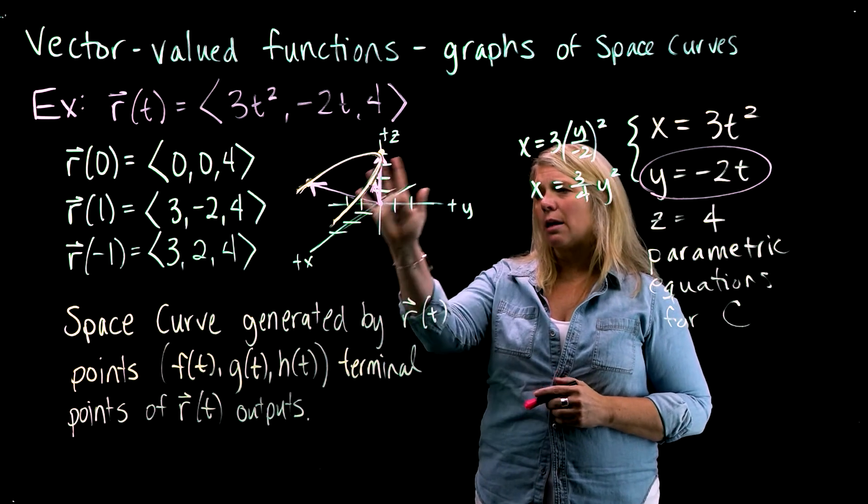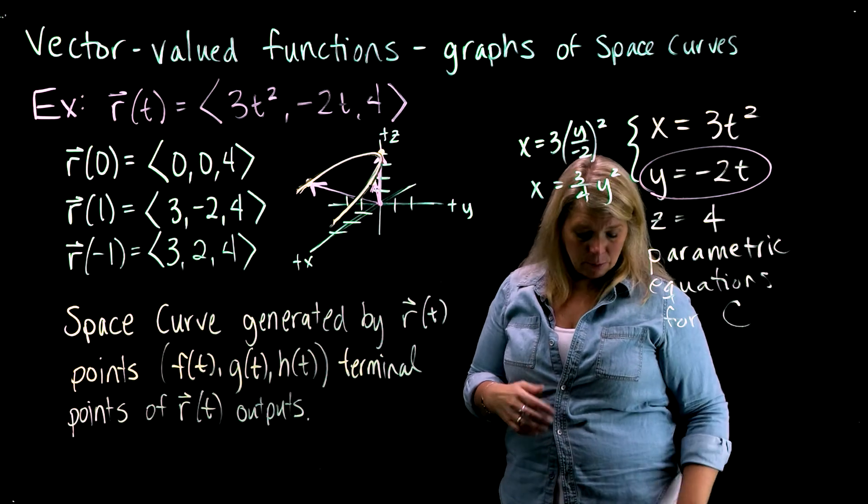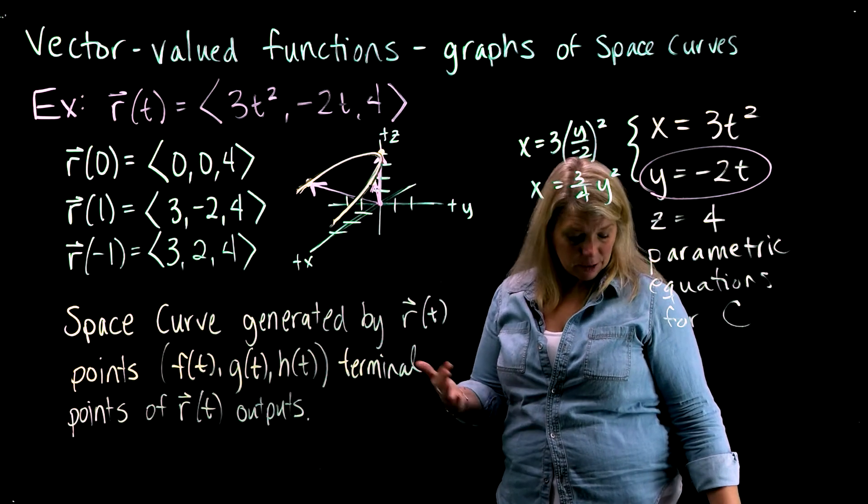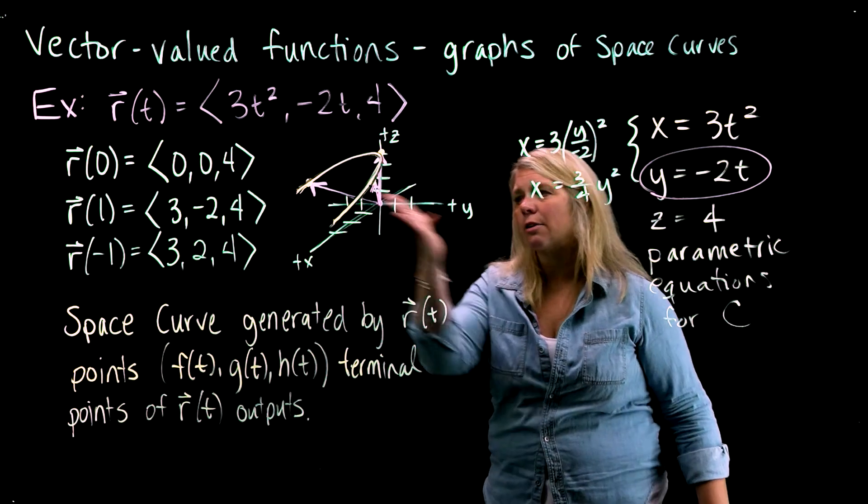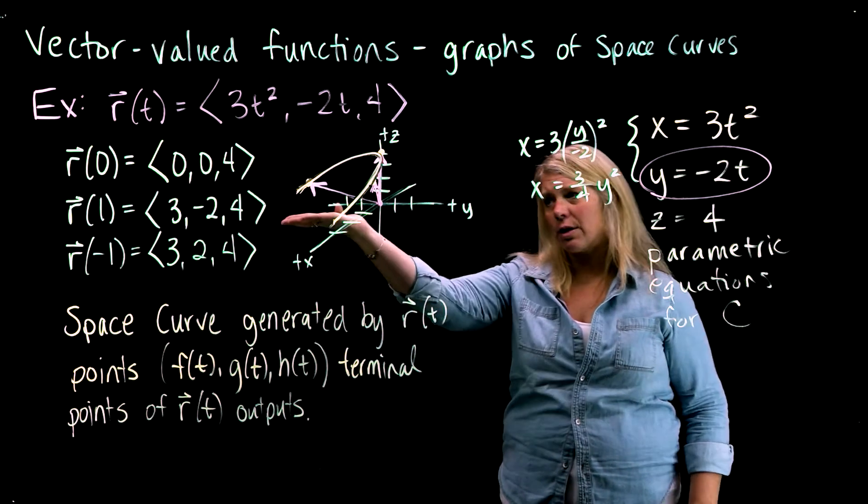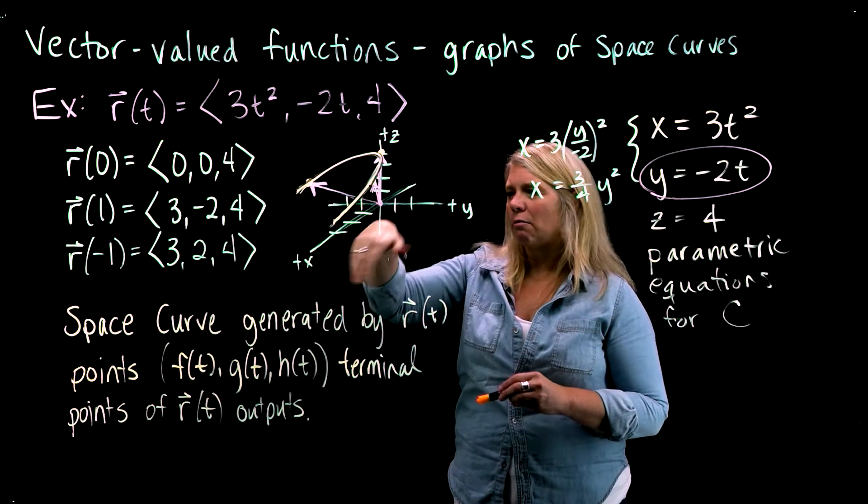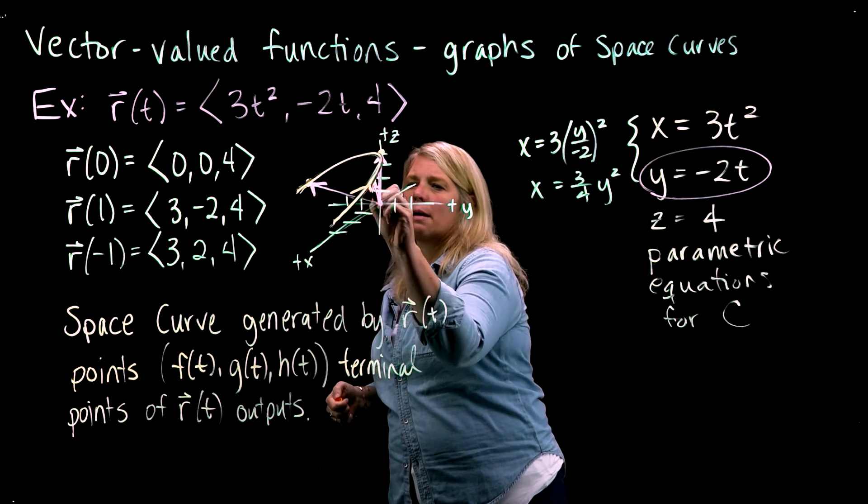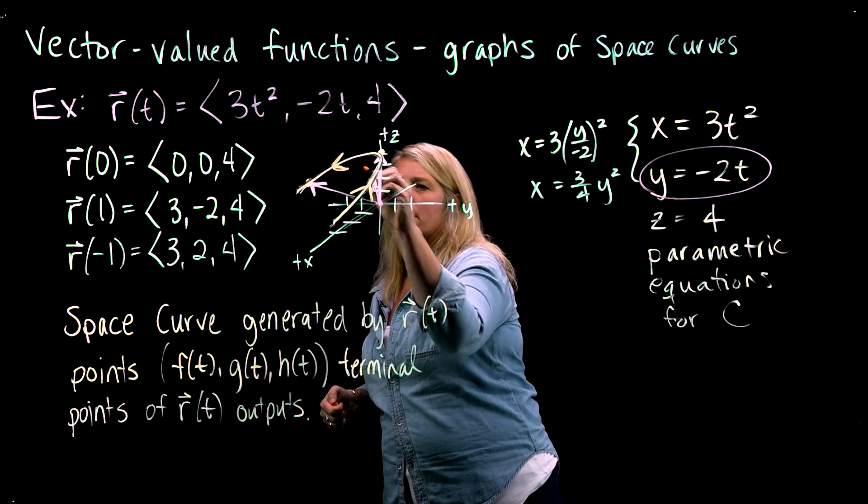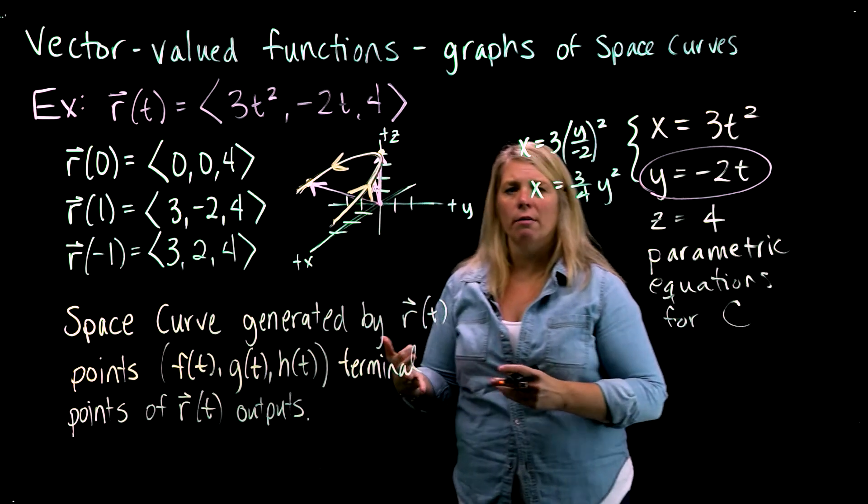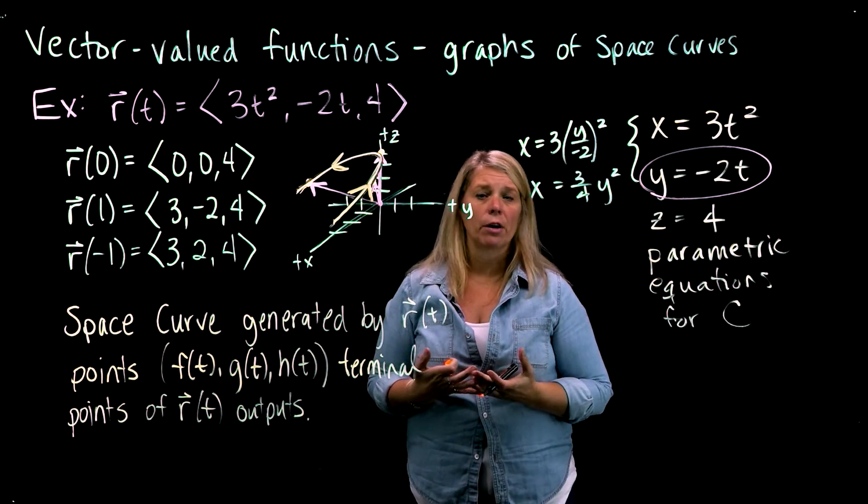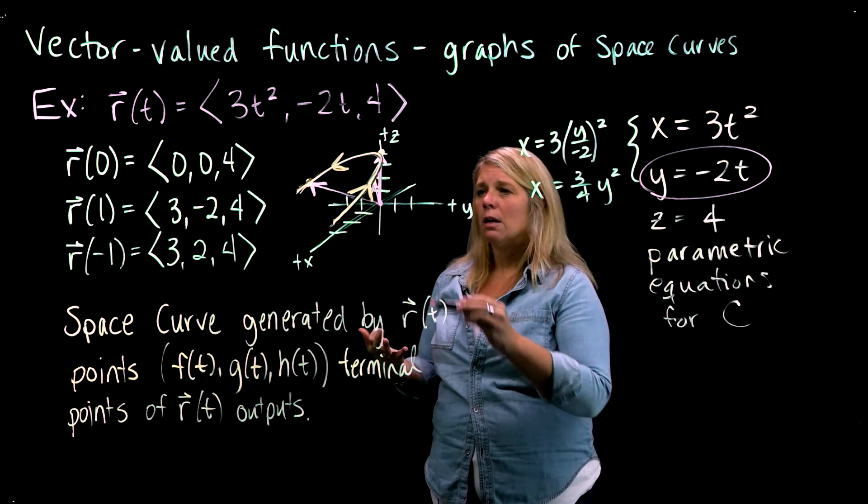So that tells me that on my space curve here, when t increases, that would be the direction of orientation, y decreases. So we're going in the direction of decreasing y, which would be from right to left along this parabola. So I'm going to indicate that orientation along that parametric curve with arrows, just like you do with parametric curves in two dimensions.